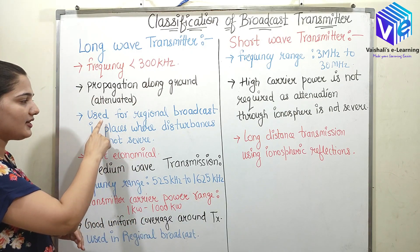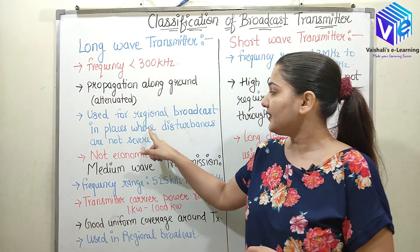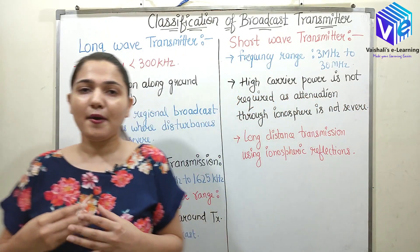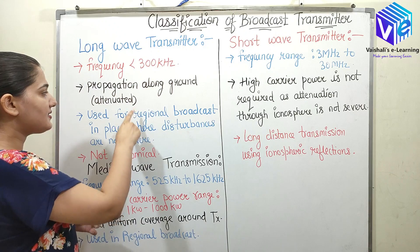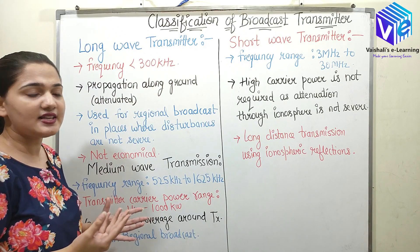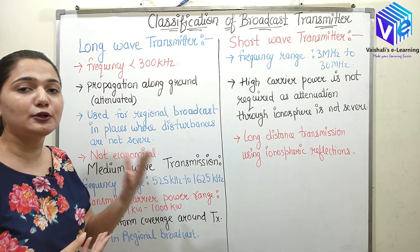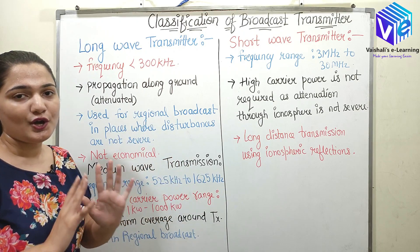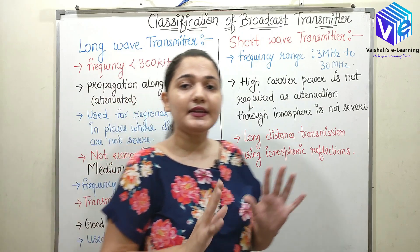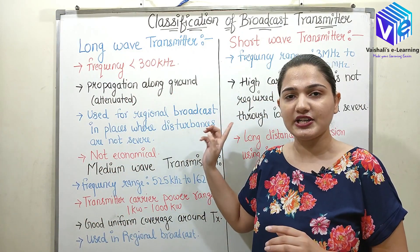The long wave transmitter is used for regional broadcast only when the disturbances are not severe. When disturbances are severe, the signal experiences even greater attenuation and may not even reach the next repeater, causing complete failure. So it is used only when disturbances are not severe and only for regional broadcast.